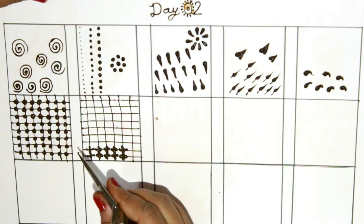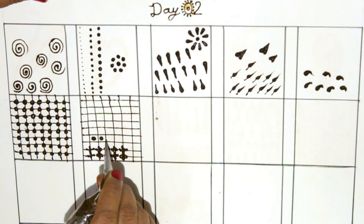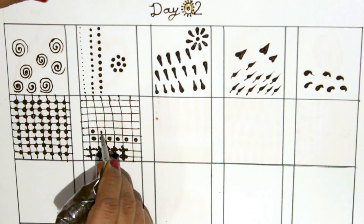Next, put the dots in the center of each box. We can use dots in many different designs. We have already talked about it before.